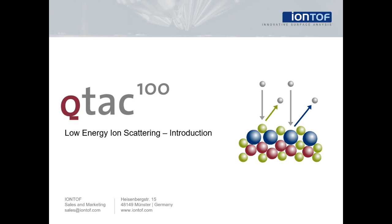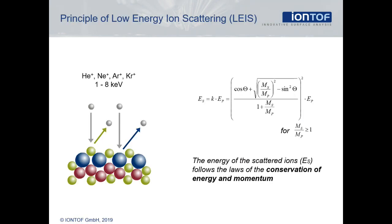Welcome to this short introductory presentation about low energy ion scattering, often referred to as LEIS. In LEIS, we shoot noble gas ions of a few keV at the surface of interest and measure the energy spectrum of the scattered ions.